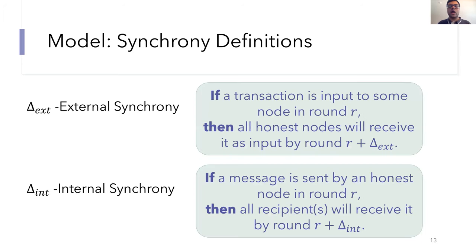Okay, so next I'll describe what it means for our protocols to be synchronous. In this talk, I'll focus mostly on our synchronous protocol, but our protocols can actually be made to work for completely asynchronous models as well. To define synchrony, we assume that the protocols take place in rounds and our nodes have consistent clocks. The external network is said to be delta synchronous if the following condition holds: if a transaction is input to some node in round r, then all of the honest nodes will have received it as input in round r plus delta.